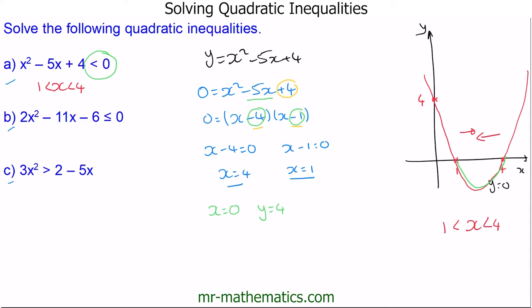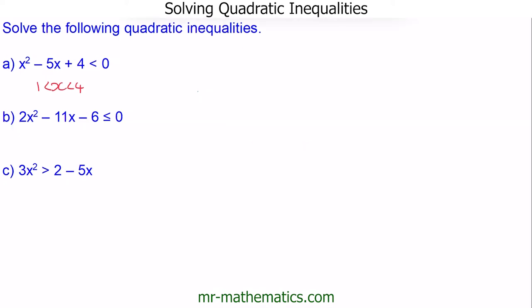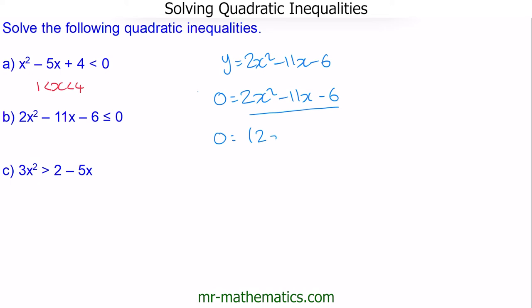Let's move on to question B. I'm going to write the inequality as an equation involving y, so y is equal to 2x squared minus 11x minus 6. The roots will be when y equals 0, and now we can factorize the right hand side. We have 0 equal to (2x in one bracket)(x in the other bracket), because this gives us the 2x squared term.